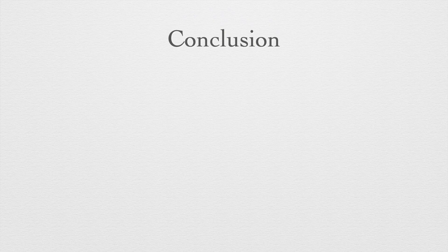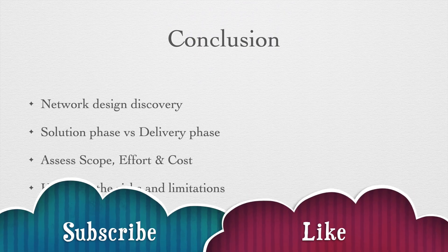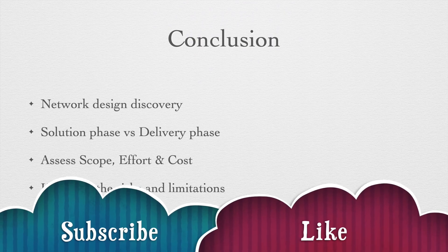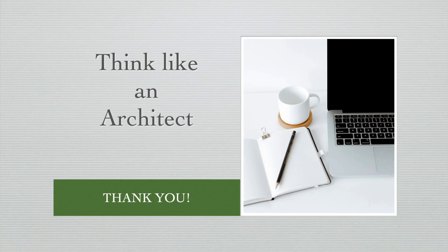Let's conclude what we've covered. It's very crucial to understand the source network design — your entire migration success is dependent on that. The more clarity you gain during the solutioning phase rather than in delivery will make a huge difference in migration projects. It helps in identifying the scope, efforts needed, and associated costs. For example, discovering the L2 stretch requirement late in the delivery phase will impact efforts and add delays to the project. Most importantly, highlight and document all risks and limitations — especially the complexities that Layer 2 solutions add to the migration project. Thank you for watching and good luck.